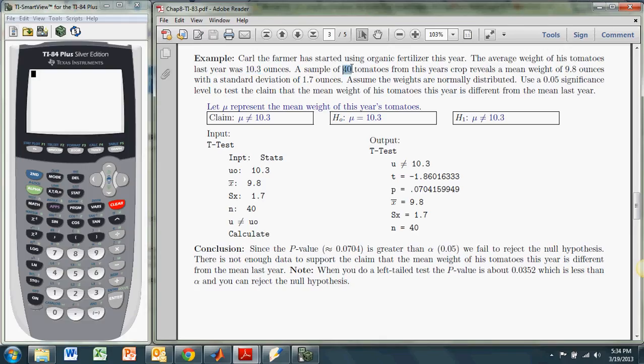So in a sample of 40 tomatoes from this year, there is a mean of 9.8, so it's certainly different from last year in this sample. And the sample standard deviation is 1.7 ounces. And we'll assume the weights are normally distributed. And we'll use a 0.05 significance level to test the claim that the mean weight of his tomatoes this year is different from the mean last year.